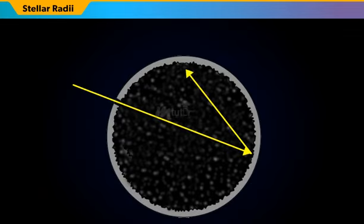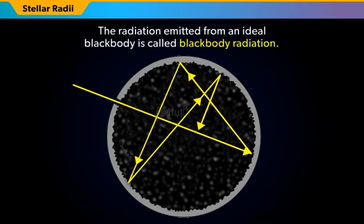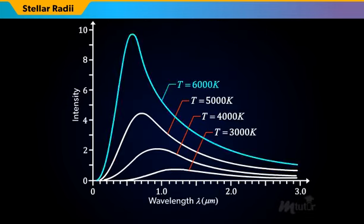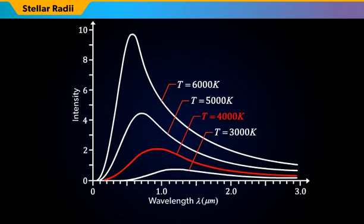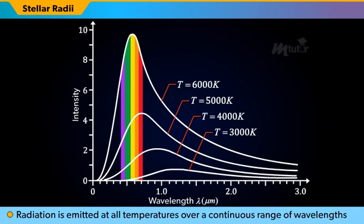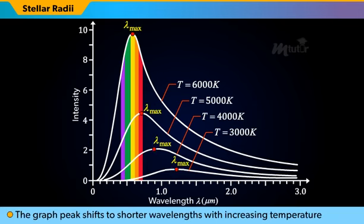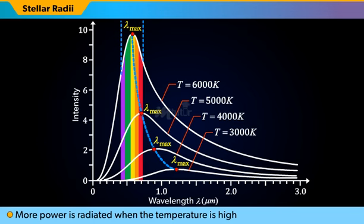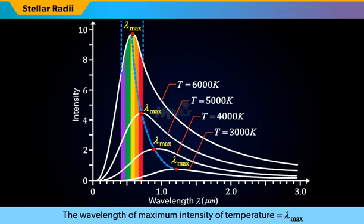The definition of blackbody radiation is: the radiation emitted from an ideal blackbody is called blackbody radiation. The diagram shows the variation in the wavelength of the intensity of electromagnetic radiation emitted by a blackbody at different temperatures. Radiation is emitted at all temperatures over a continuous range of wavelengths. The graph peak shifts to shorter wavelengths with increasing temperature. More power is radiated when the temperature is high. Lambda max is the wavelength corresponding to the maximum emission intensity at each temperature.